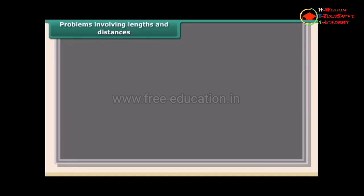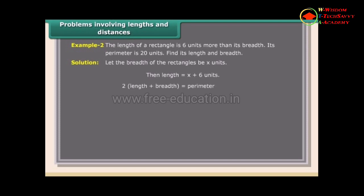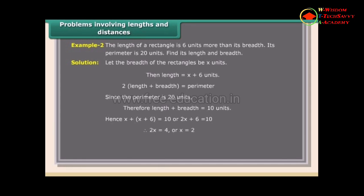Length problem: The length of a rectangle is 6 units more than its breadth and its perimeter is 20 units. Let breadth = X; then length = X + 6. Since perimeter = 2(length + breadth) = 20, length + breadth = 10. So X + X + 6 = 10, giving 2X = 4, X = 2. Breadth = 2 units, length = 8 units.